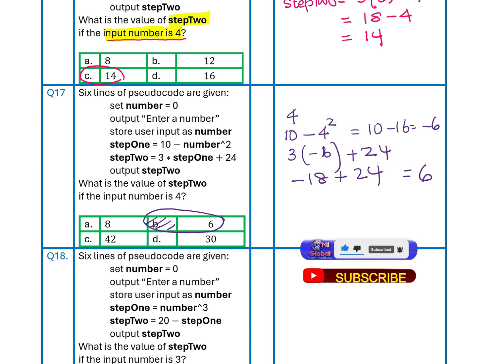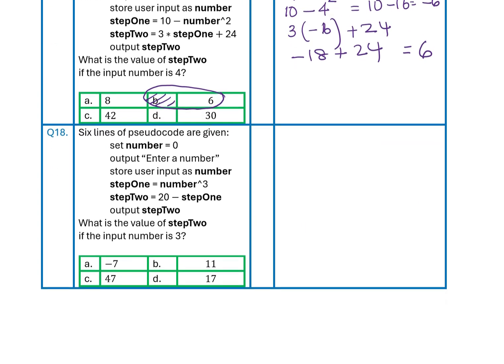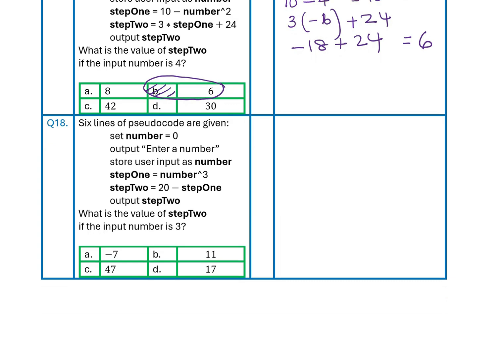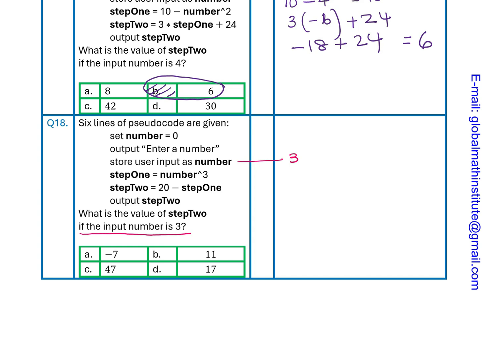Here is the third and final question. You can pause the video, answer it, and then look into my suggestions. Again six lines of coding: we define a number, input a number, store it, then follow Step 1 and Step 2 to get the result. This time the input number is 3, so the variable 'number' equals 3. Step 1 is number cubed, so 3 to the power of 3, which equals 27.